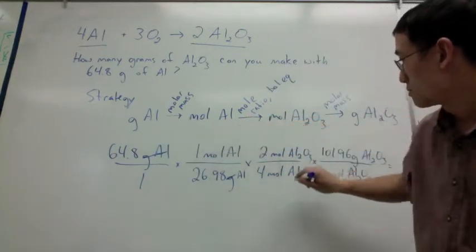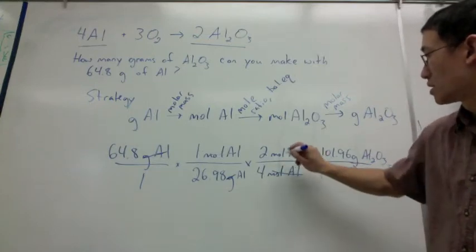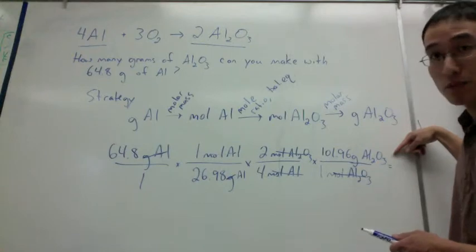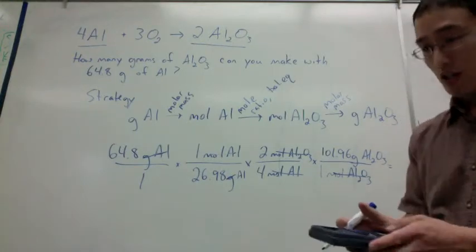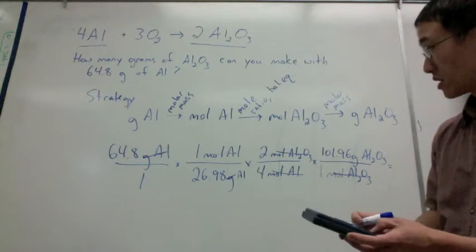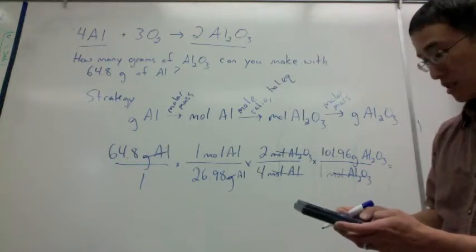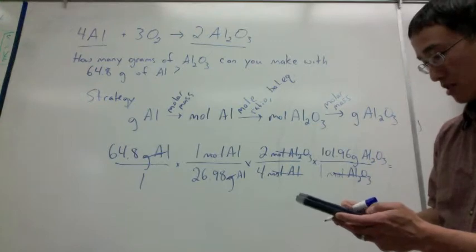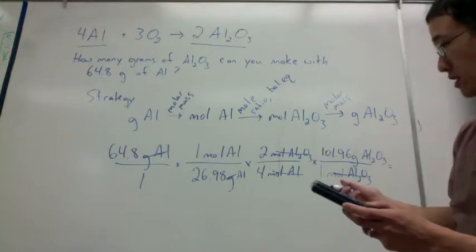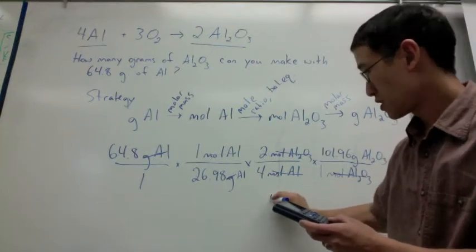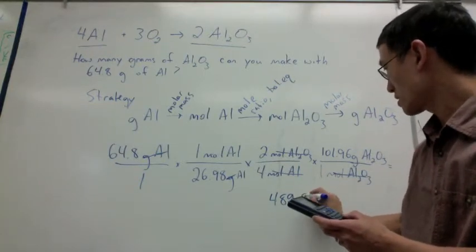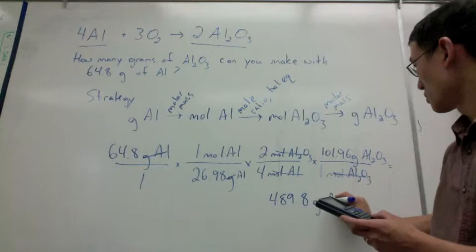If you do all that math, you should get 122.3 grams of aluminum oxide.